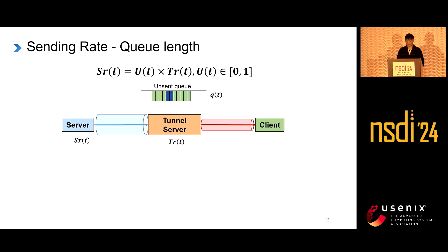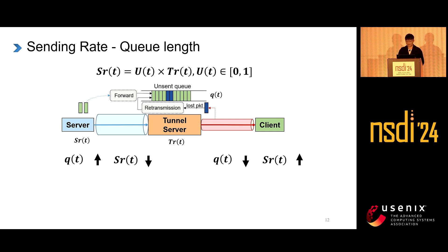First, we model the server sending rate, which must be lower than the tunnel sending rate, because the tunnel server needs to both forward server packets and retransmit lost packets. Therefore, SRT equals UT multiplied by TRT, where UT is greater than zero and less than one. Because bandwidth changes and there are delays in feedback, it is common for the tunnel server to have a queue. The larger the queue length, the lower the server sending rate should be, and vice versa, because the tunnel server needs to empty the packet queue.